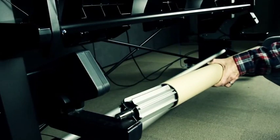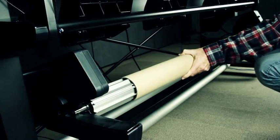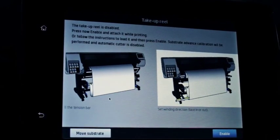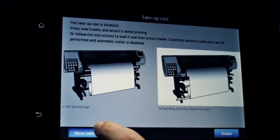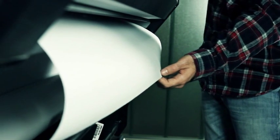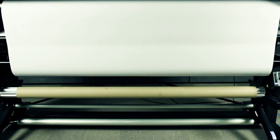Load the take-up reel into the printer by pushing firmly on both ends. Advance the substrate by pressing the Move Substrate button on the front panel. Make sure that the substrate passes in front of the loading table. This operation is not needed if you are loading the take-up reel while printing.